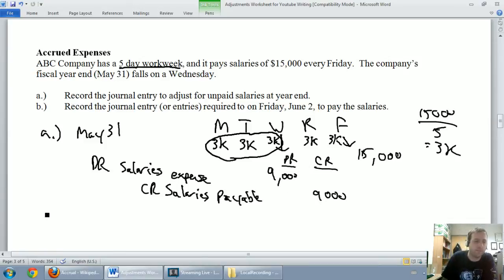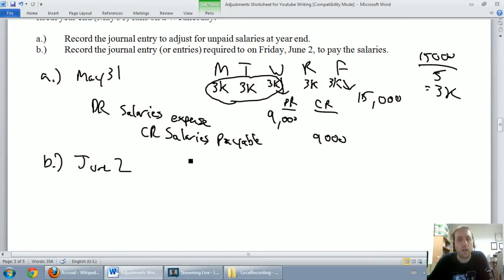Let's look at part B. Part B says record the journal entry required on Friday, June 2nd. So it's June 2nd. And I've got to pay the salaries.